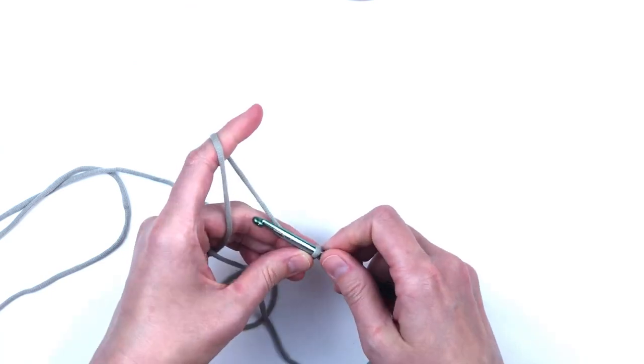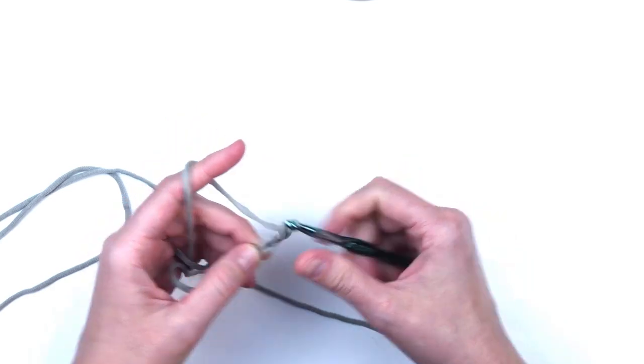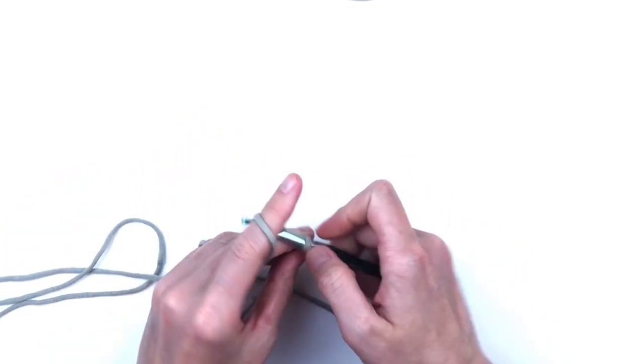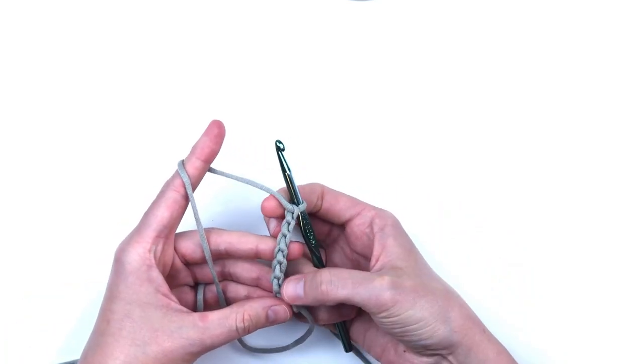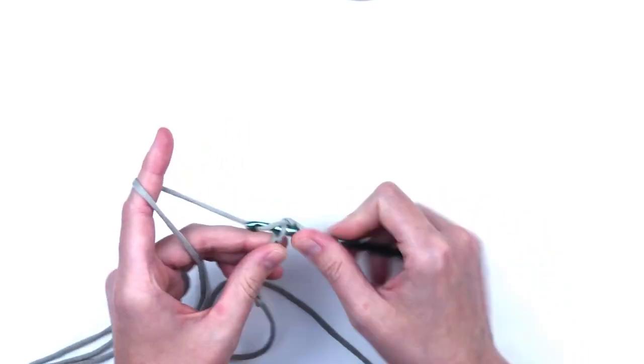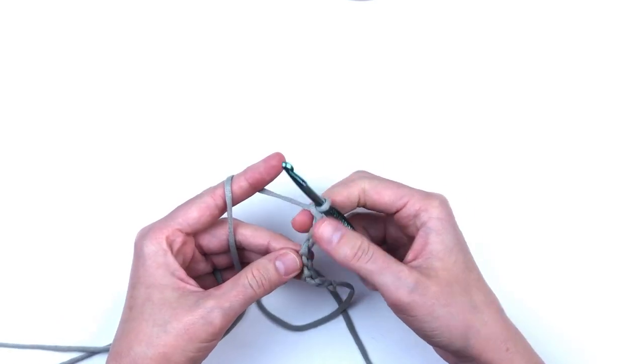Start by loosely chaining eight. Turn so that the back bump of the chain is facing you.